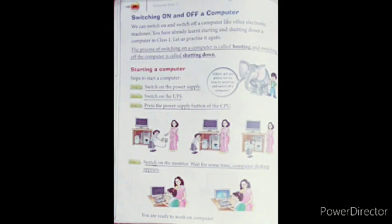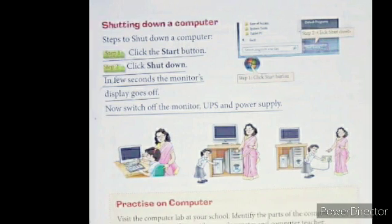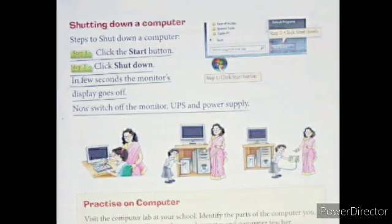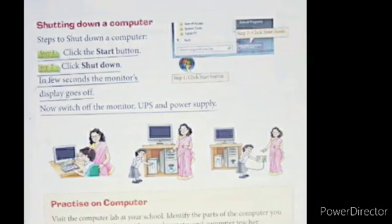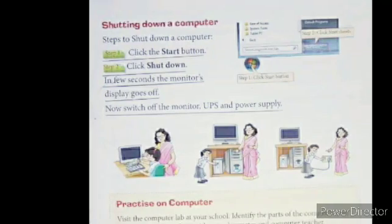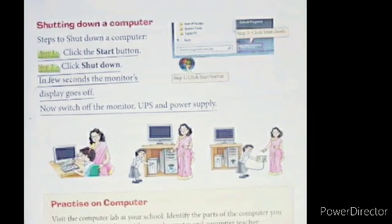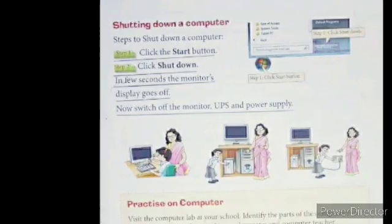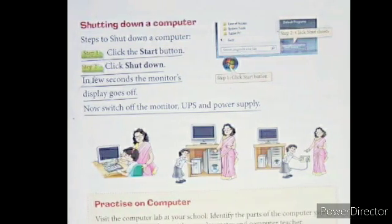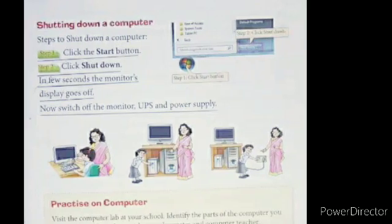After that we have to switch on the monitor. When we press the monitor button, it takes a few moments and then the monitor screen turns on and we can see that our computer has started working. To shut down a computer there are two steps: step one is click the Start button, and step two is click Shut Down. In a few seconds the monitor display goes off, and after that the monitor, UPS, and power supply also have to be switched off.